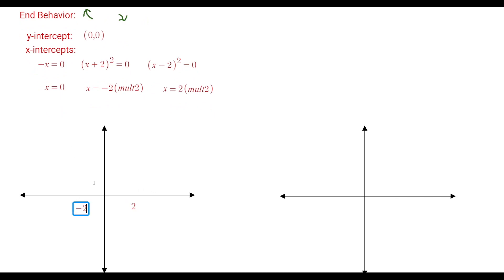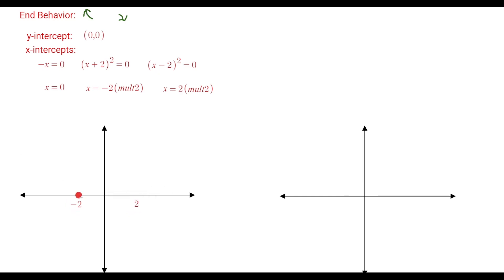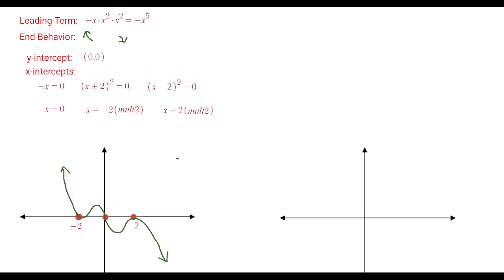I'll label −2, 0, and 2 on the axes. The end behavior goes up to the left. Starting from upper left, I bounce off the x-axis at −2, pass straight through at zero, then bounce off at 2, and the graph goes down to the right. So the behavior is: bounce, pass through, bounce.